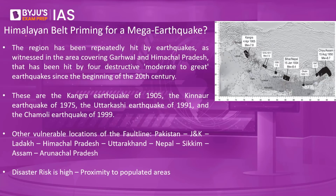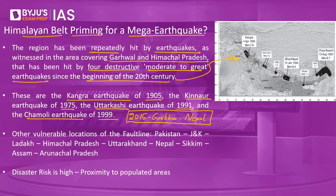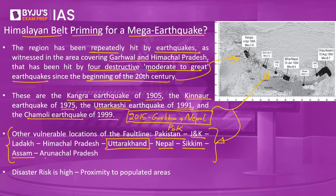There has been a long-standing prediction that the Himalayan belt is priming for a mega earthquake, because the region has been repeatedly hit by several earthquakes. Just in the Garhwal-Himachal Pradesh belt there have been four destructive moderate to great earthquakes since the beginning of the 20th century: the Kangra earthquake of 1905, the Kinnaur earthquake of 1975, the Uttarkashi earthquake of 1991, and the Chamoli earthquake of 1999. More recently, in 2015, the Gorkha earthquake in Nepal left behind a trail of destruction. In the past few decades, several major earthquakes have been reported in Pakistan, Pakistan-occupied Kashmir, and Jammu and Kashmir. Similar incidents have led to major disasters in Uttarakhand, Nepal, and Sikkim, and the northeast of India — Assam and Arunachal Pradesh — are also said to be very vulnerable to high intensity earthquakes.